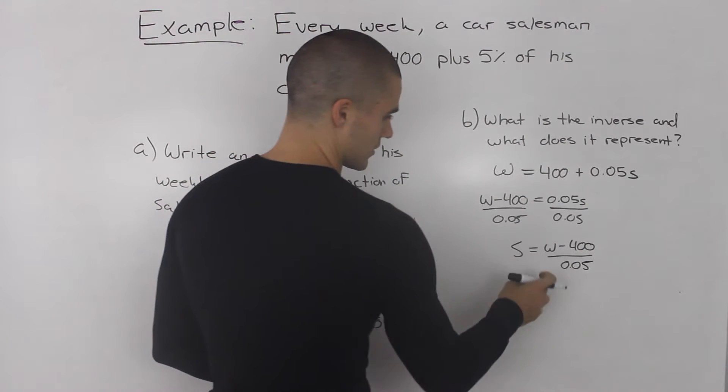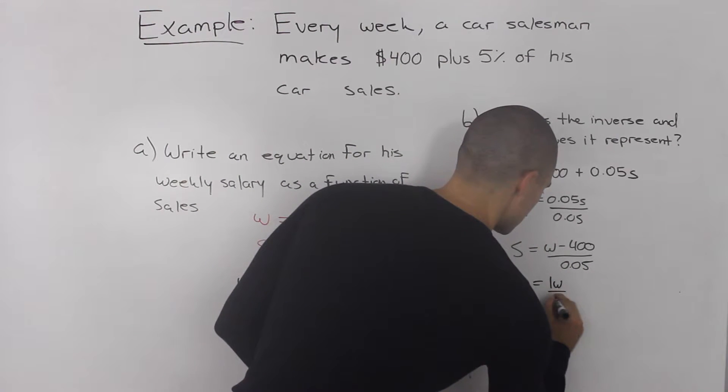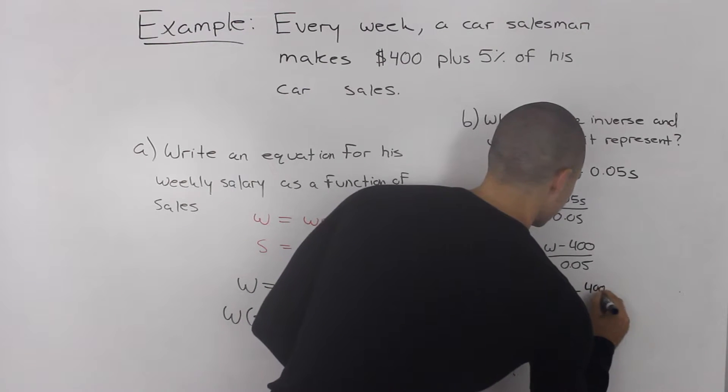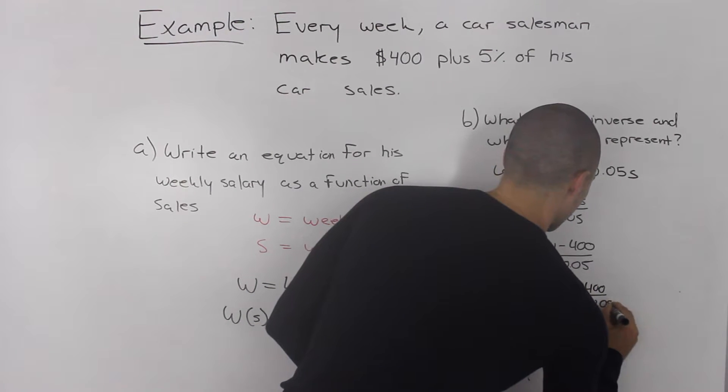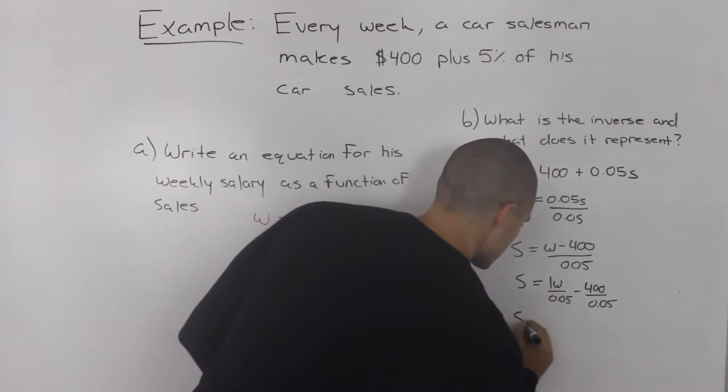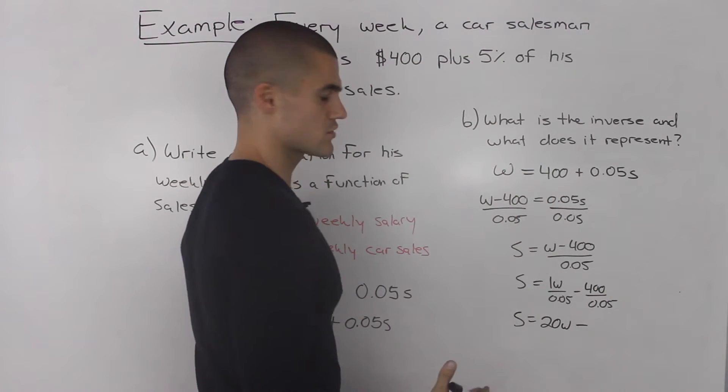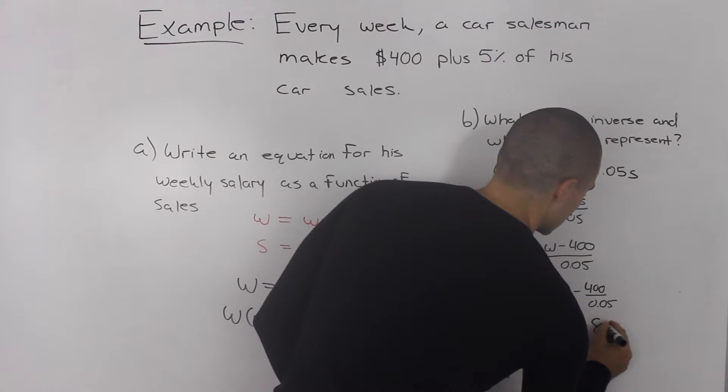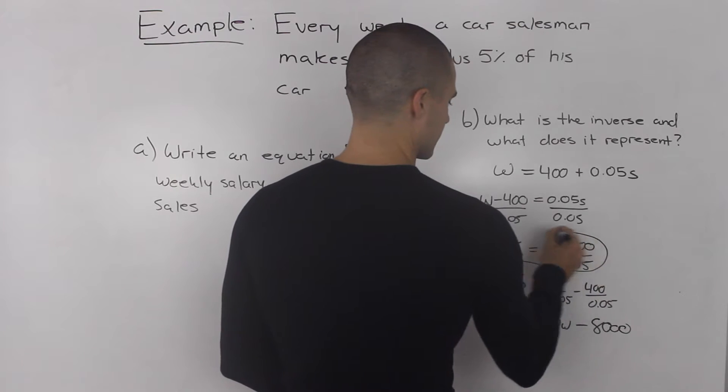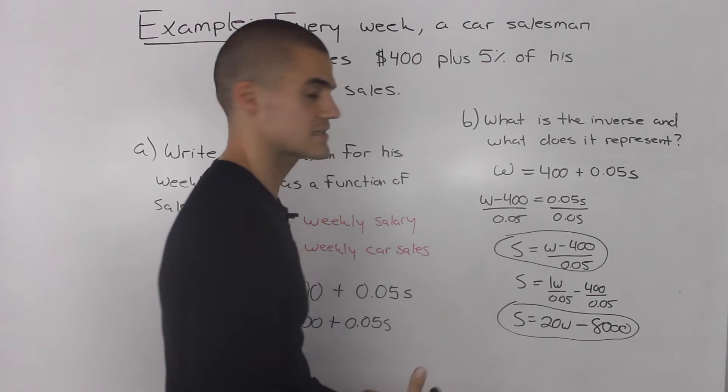We can also simplify this even further by splitting the fraction up into two terms. 1 divided by 0.05 is 20. So we'd have S is 20W minus 400 over 0.05 is 8,000. Either or works. This equation and this equation are both the same thing. They're both the inverse of the function that we got in part A.